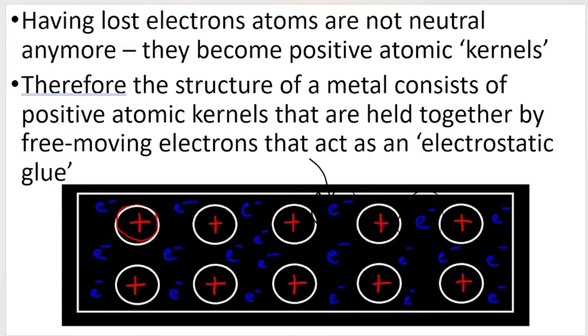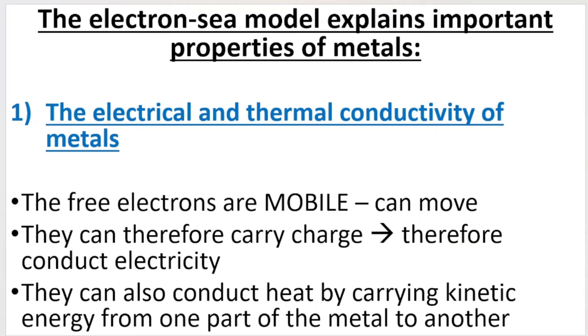And the electron sea model actually explains very important properties about metals that you need to know about. They can ask you this in your exam. So why are metals good electrical and thermal conductors? Remember, electrical conductor means it can conduct electricity. Think about a copper wire that we use in a circuit. It can conduct electricity. Copper is a metal. We've also got thermal conductors, thermal meaning heat. If you think about how you make food, the pans that you use, they're made of metal. Why? Because they're good thermal conductors. They can conduct heat.